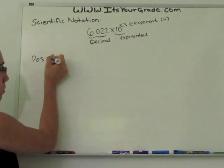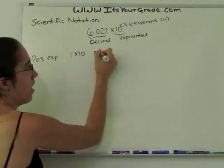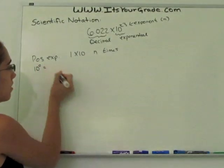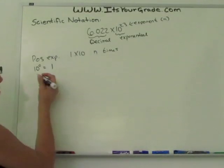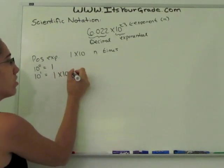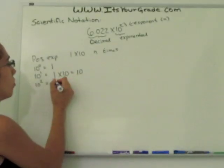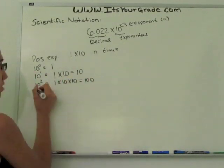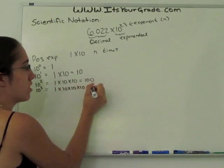If you have a positive exponent, this is the same as 1 times 10 n number of times. So if you have 10 to the 0, this is the same as just 1, because you're not multiplying by 10 any number of times. If you have 10 to the 1, this is the same as 1 times 10, which is equal to just 10. If you have 10 to the 2nd, this is equal to 1 times 10 times 10, which is 100. If you have 10 to the 3rd, this is 1 times 10 times 10 times 10, which is 1000.